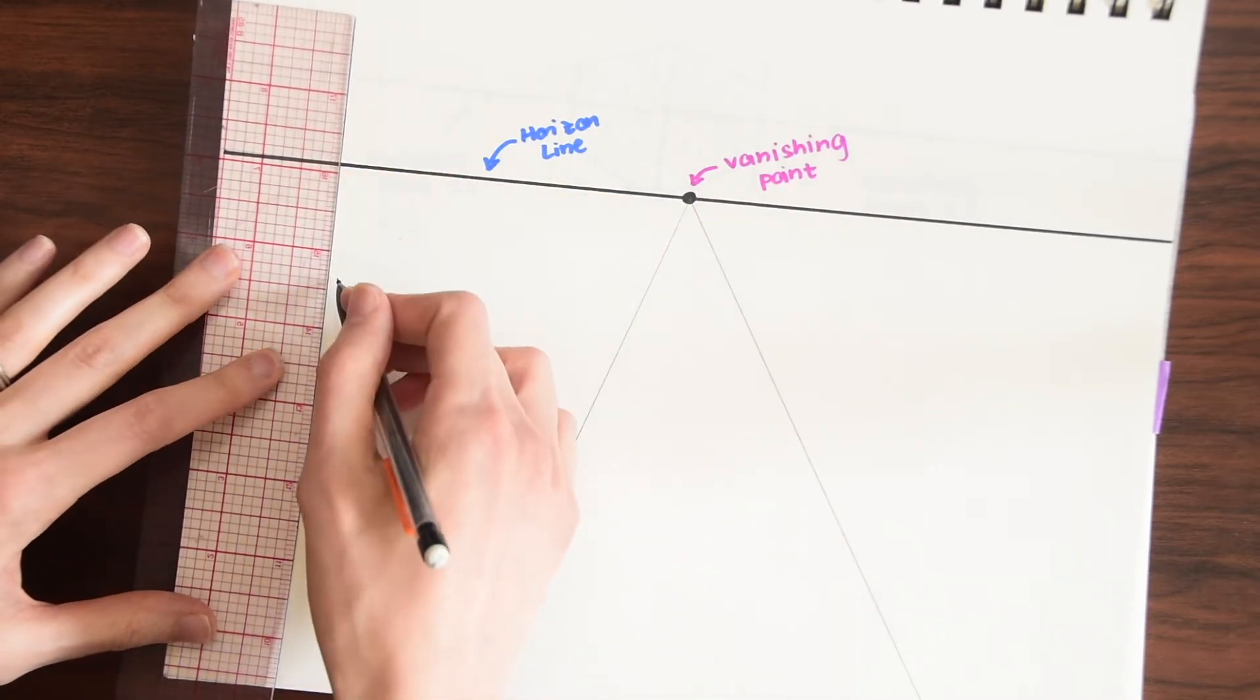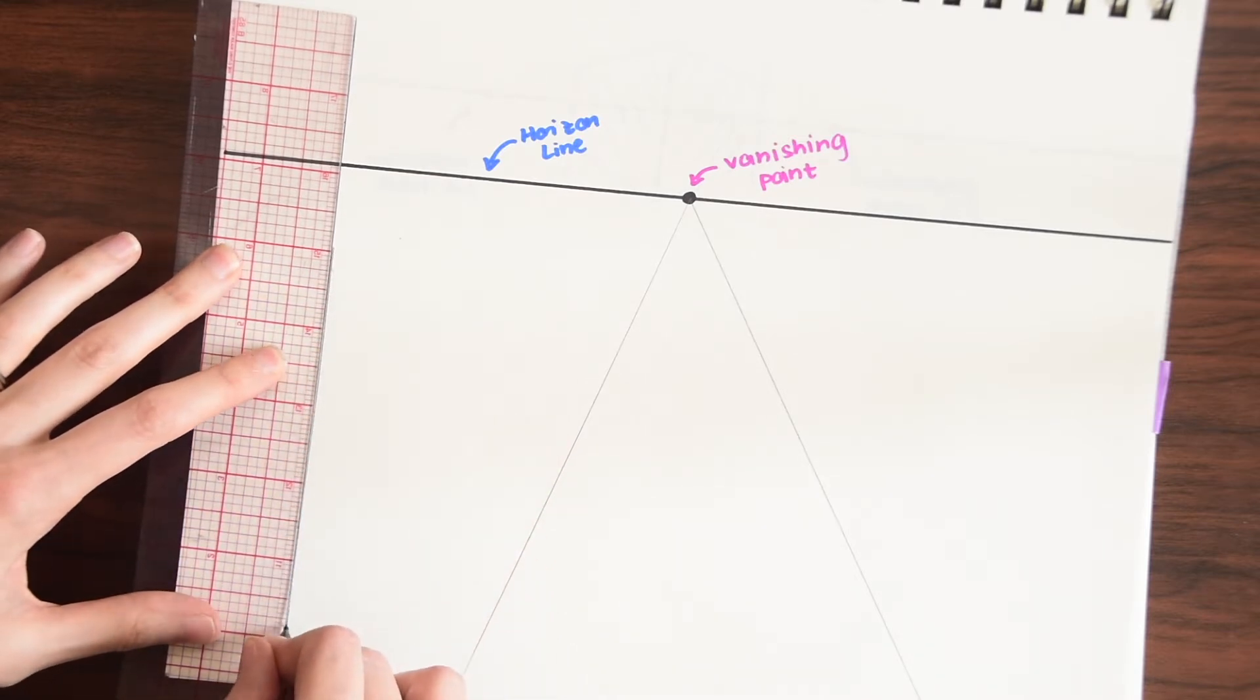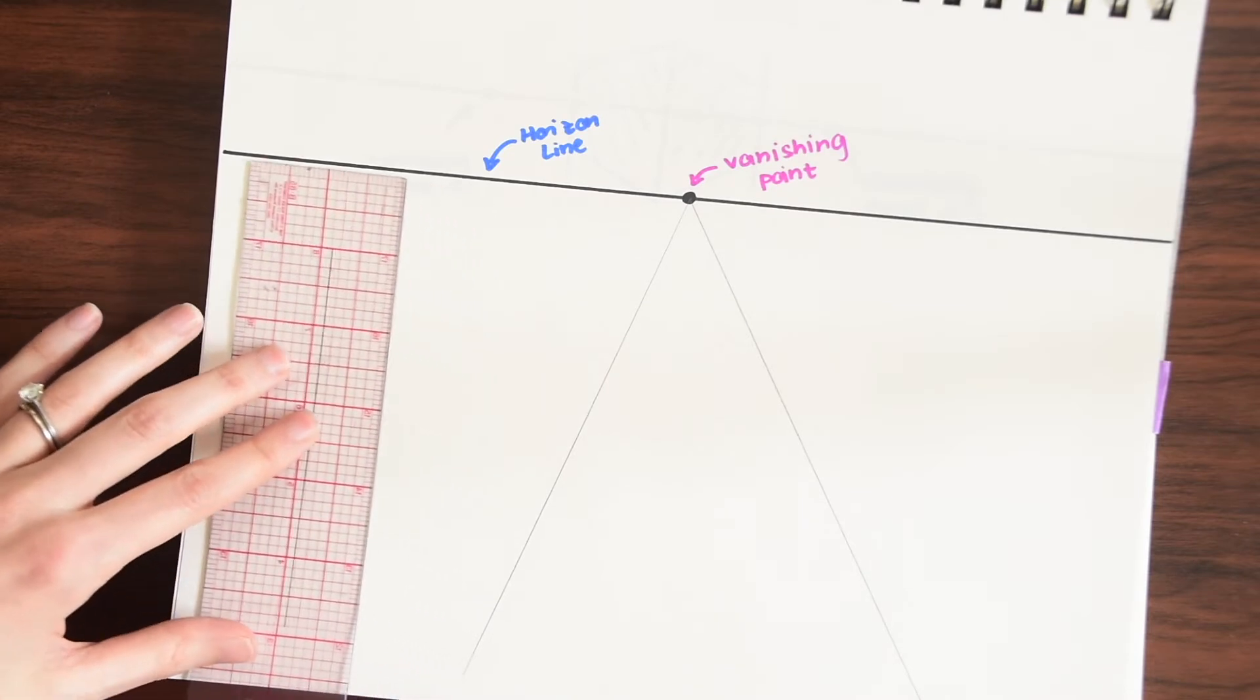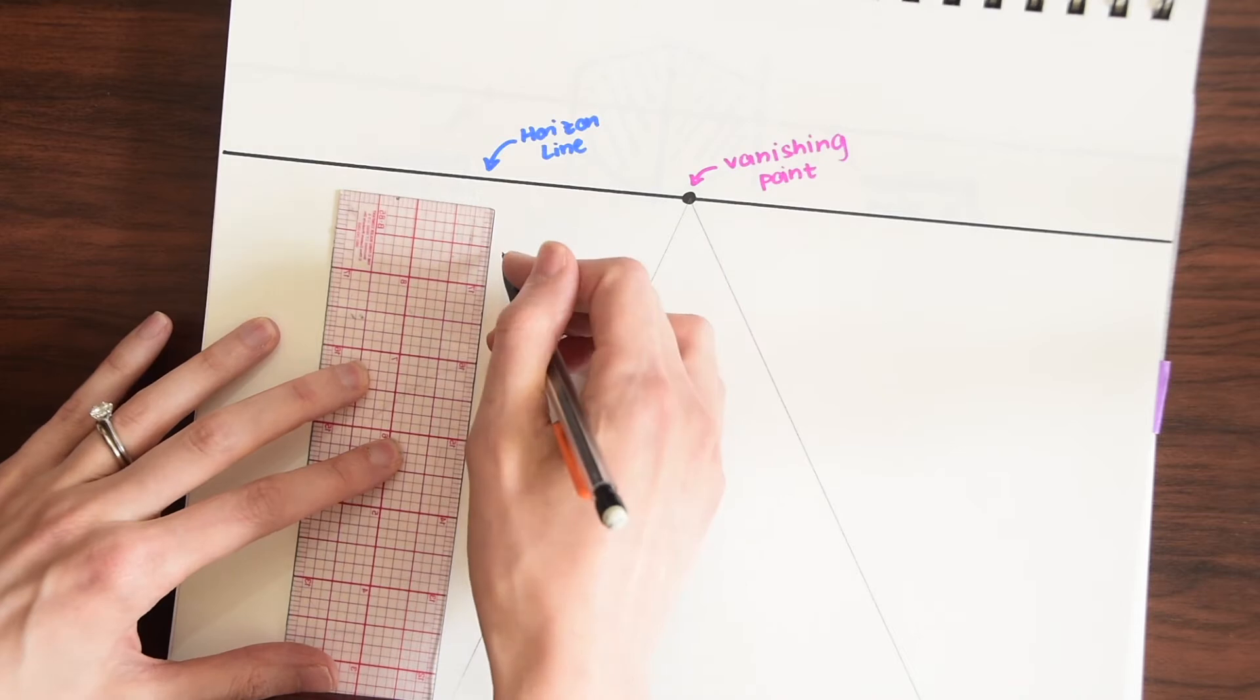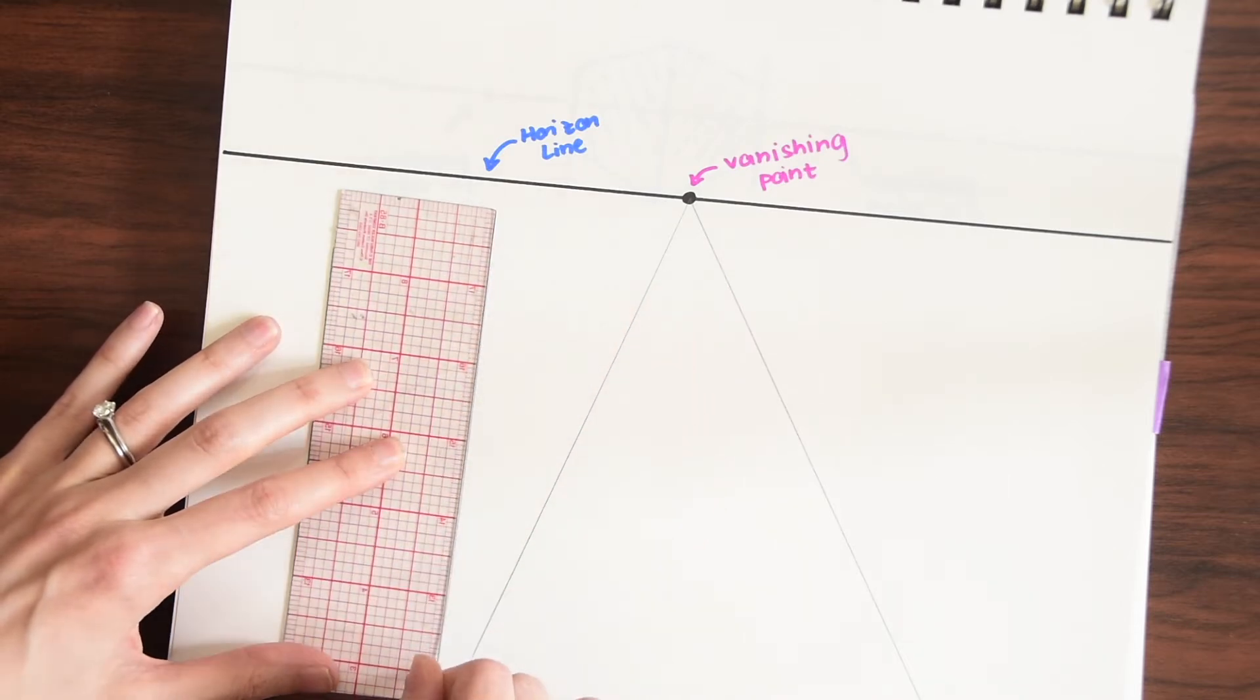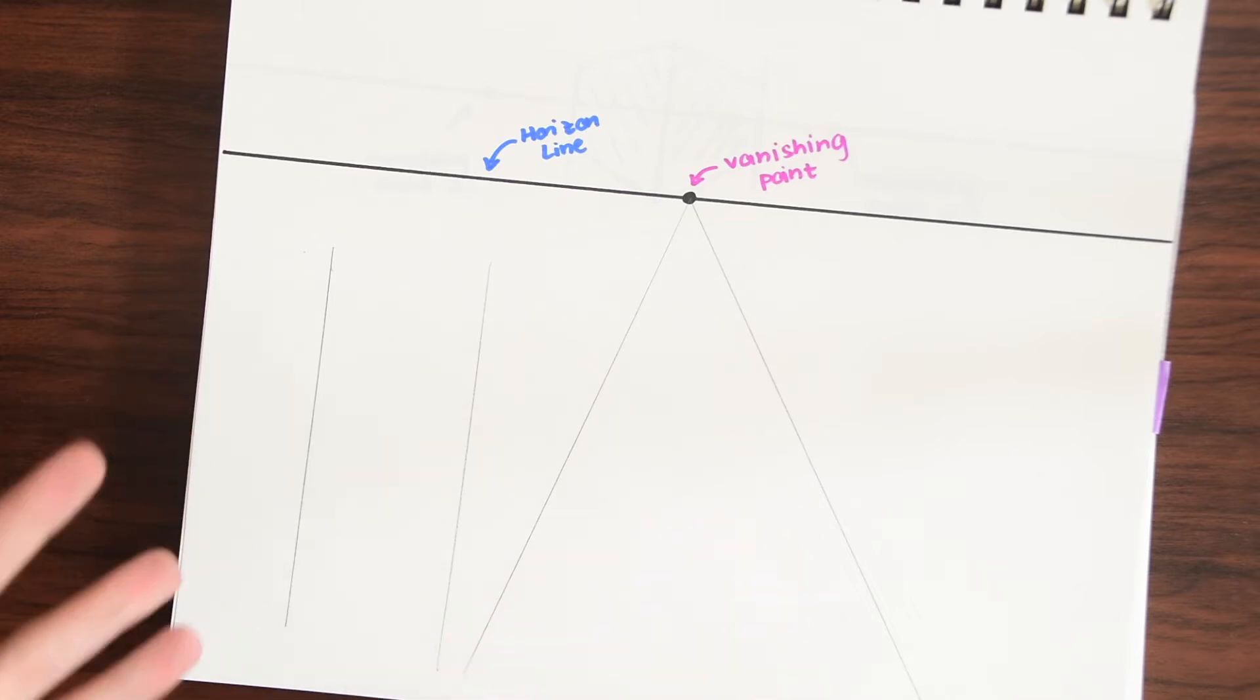So I'm just going to take my ruler out, draw this line and let's say we want the building to be this big. So let's draw another perpendicular line and now we want to give this a three dimensional shape.